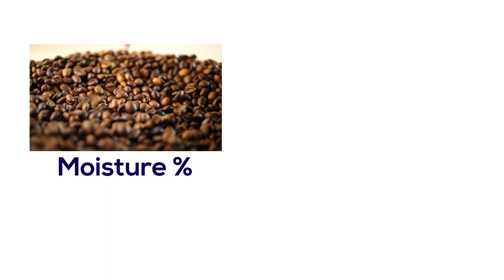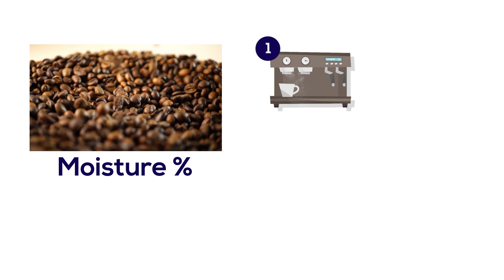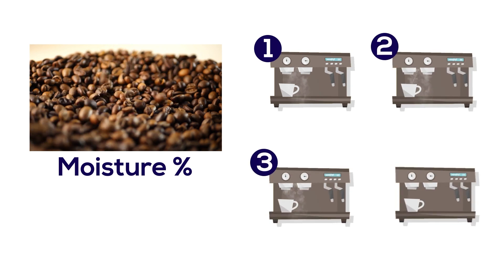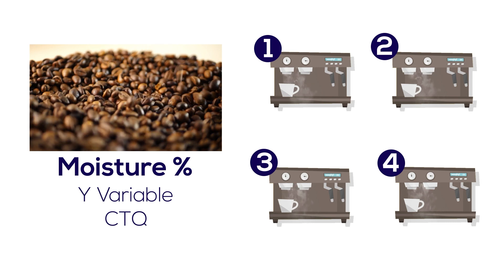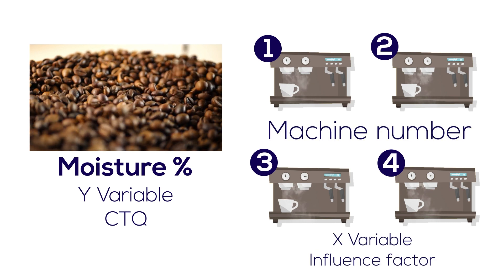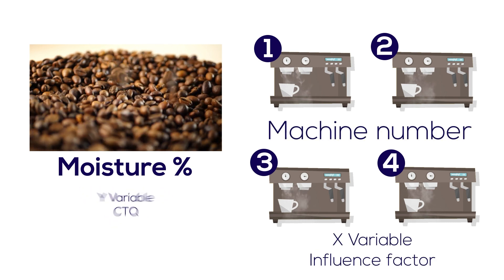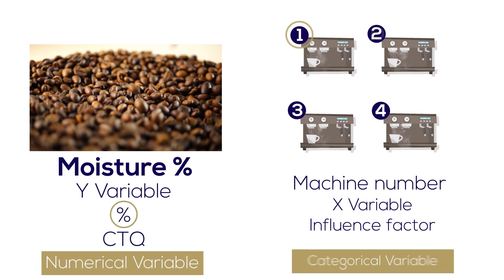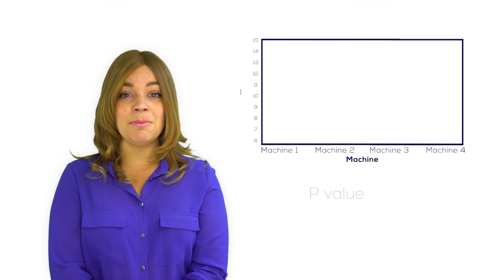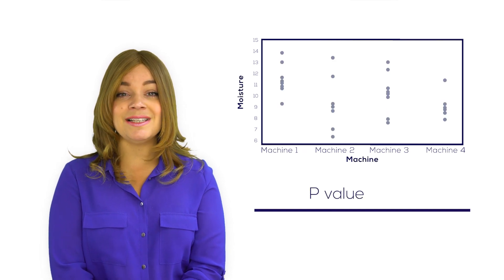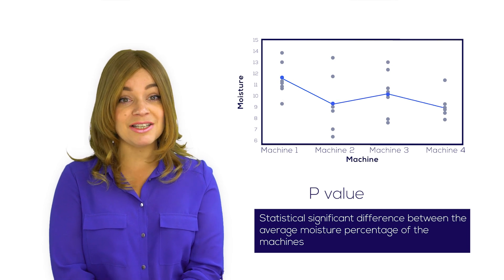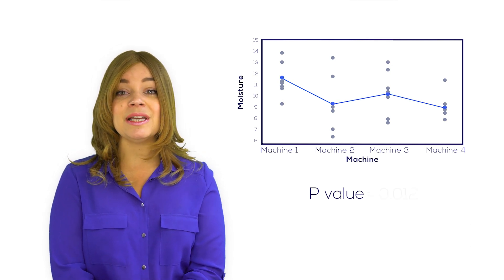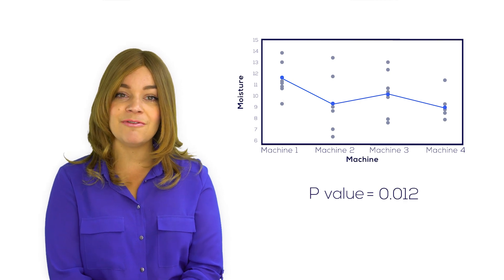Remember that we were wondering if the moisture content in coffee beans differs between the four machines it can be produced on. Moisture was our numerical Y variable and machine was our categorical X variable. We performed an ANOVA analysis and our ANOVA analysis gave us a p-value which shows a statistically significant difference between the average moisture percentages of the machines, because the p-value is below 0.05.